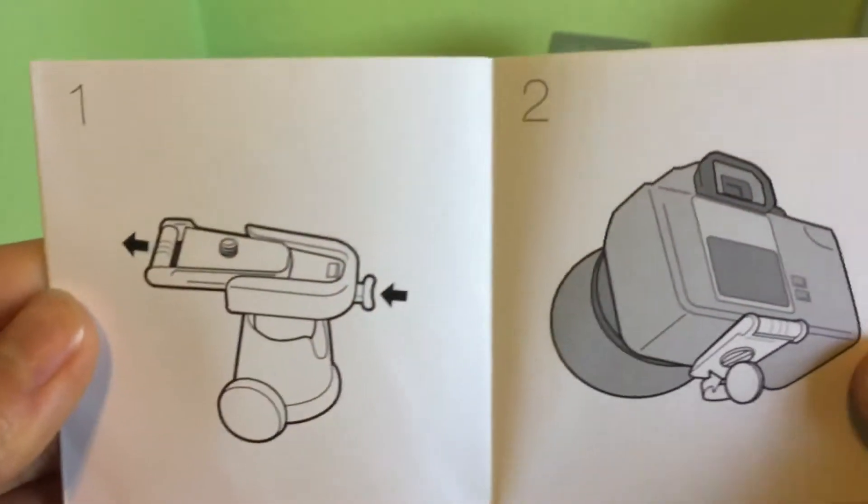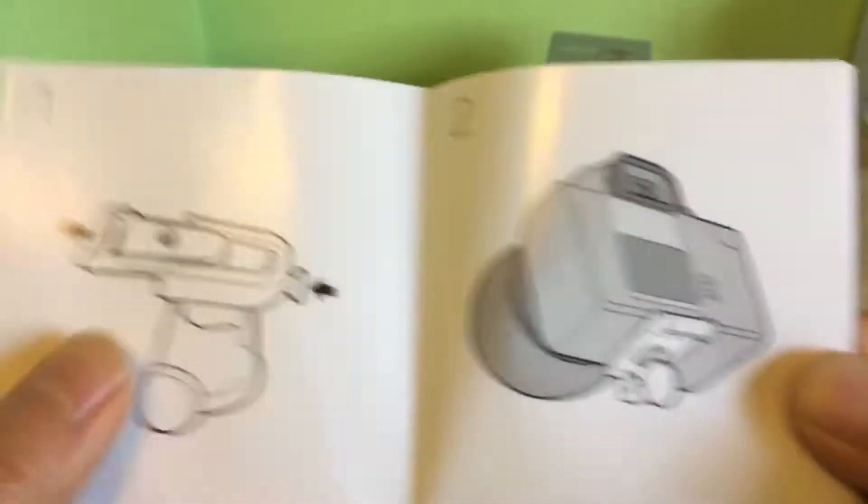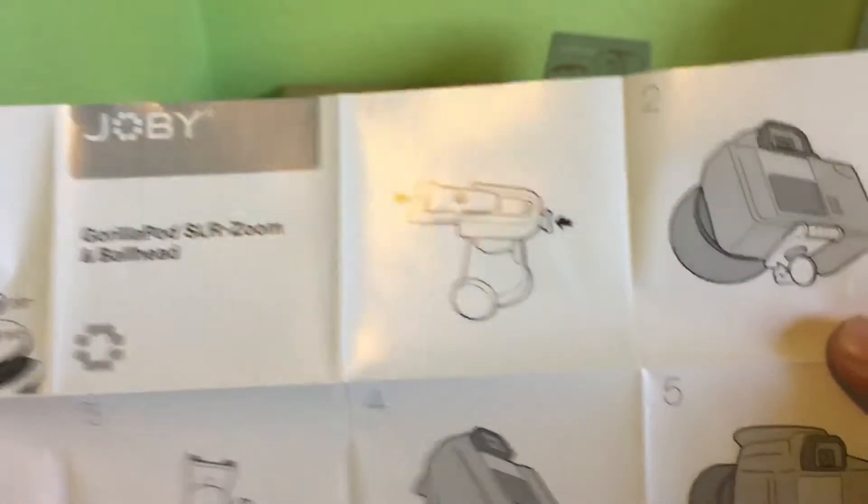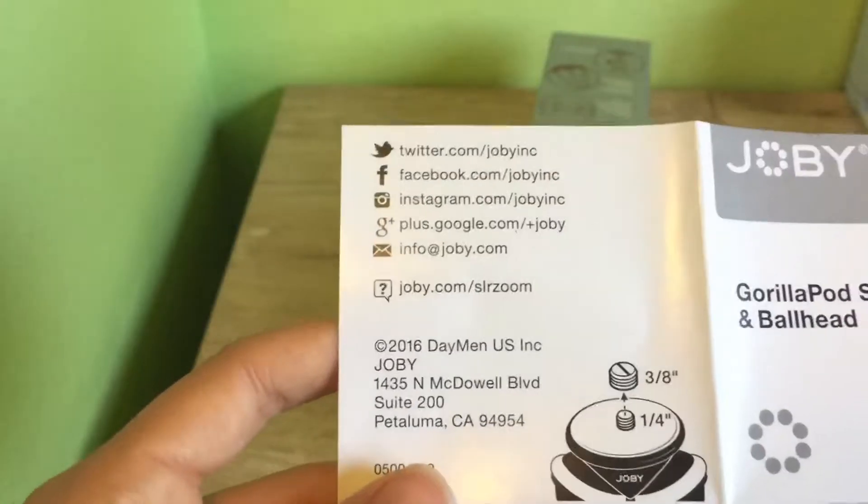So it comes with this little packet. Here's the directions. So you can attach that onto the thing. It goes on your SLR camera, or in this case, I have my phone. But yeah, here's the instructions. Take a look at that.